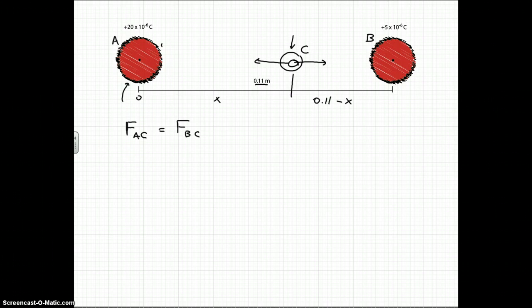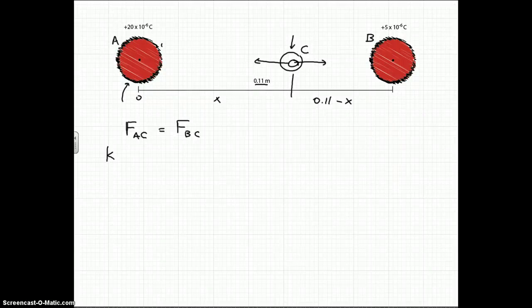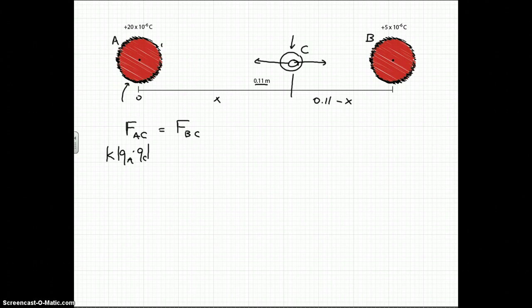So now we just plug in our equation for the force. So we have K, which is just a constant, times QA, QC, and that's the absolute value, all over the distance between them squared. We'll call that R1 squared. And that has to be equal to K, same thing, QB this time, times QC, all over R2 squared.